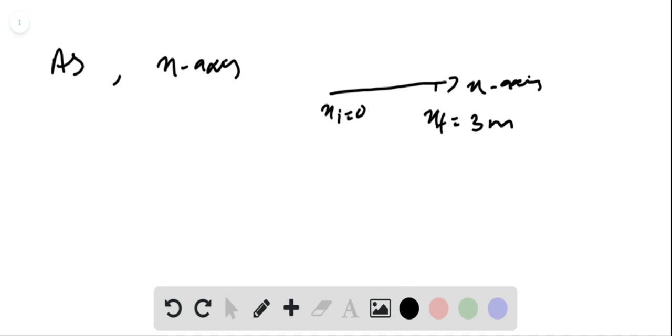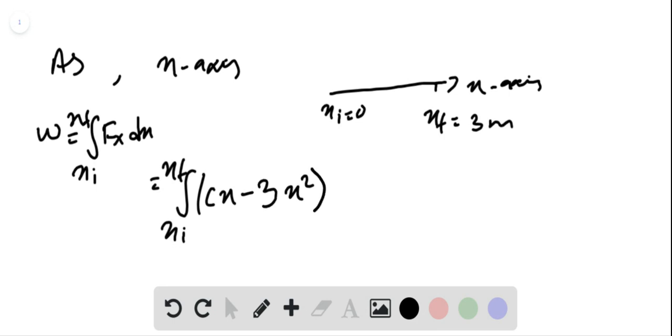The work done by the force is given by work equals the integral from x initial to x final of fx dx. We're integrating from x initial to x final: cx minus 3x squared dx.